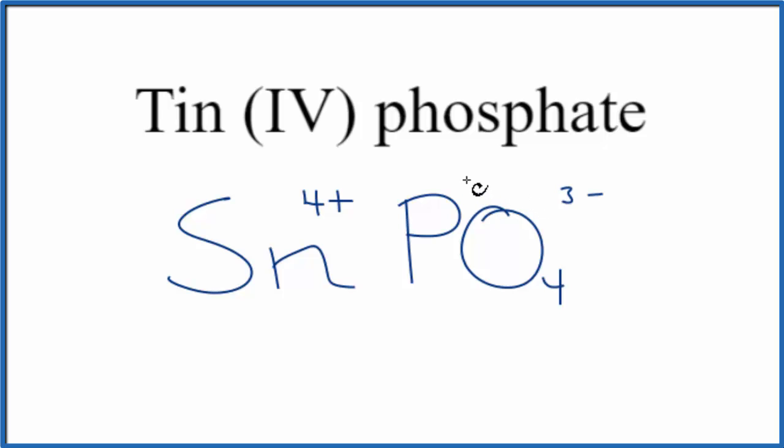The way we can do this is use something called the crisscross method. We can move the 3 down here and the 4 over here. Since we have 4 phosphate ions, we need to put parentheses around that to show that.